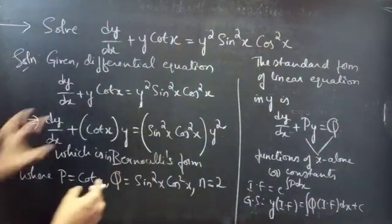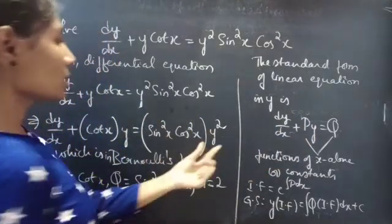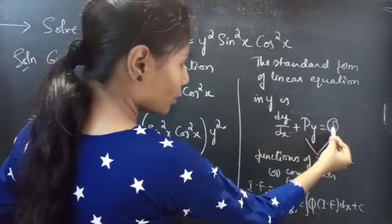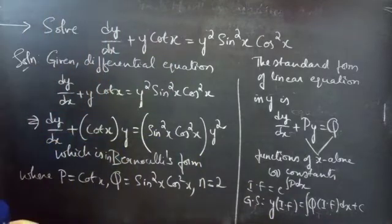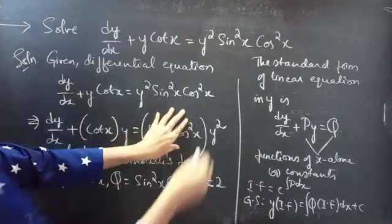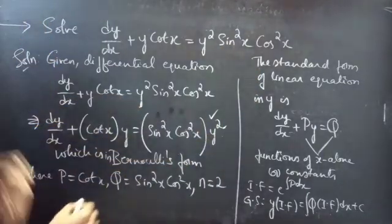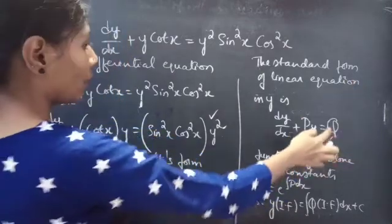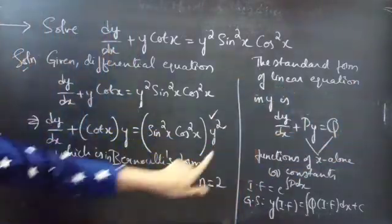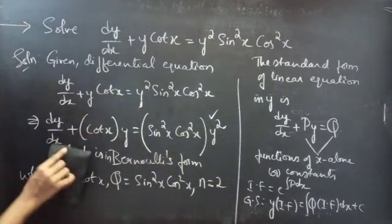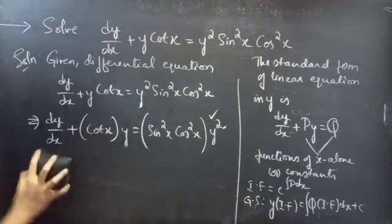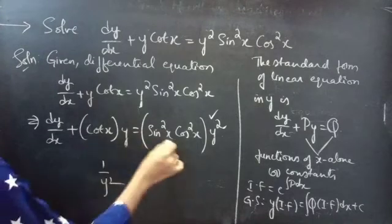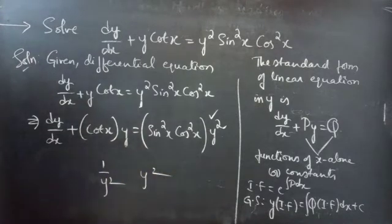If you notice, the LHS remains the same, but in Bernoulli's equation the RHS has an extra function of y, whereas in linear form q is a function of x alone or a constant. So we need to eliminate y² from the Bernoulli's equation. We can do this by multiplying both sides by 1/y², or equivalently dividing both sides by y².